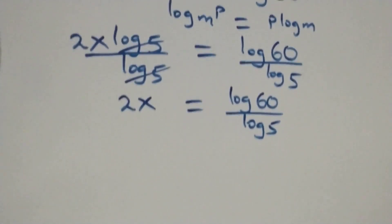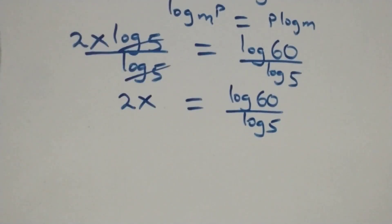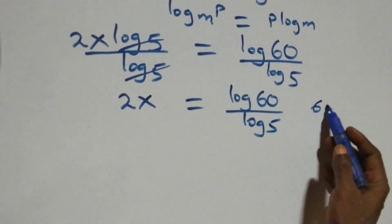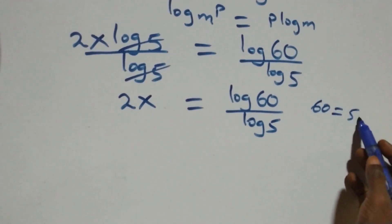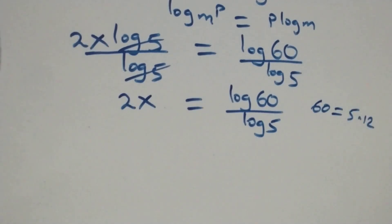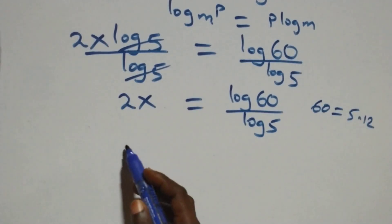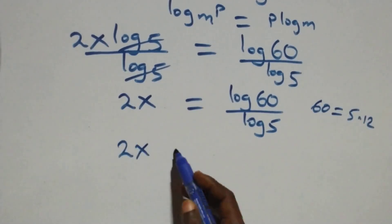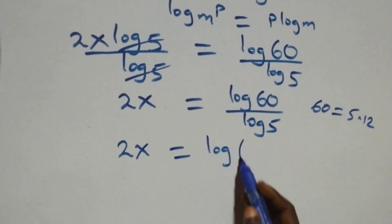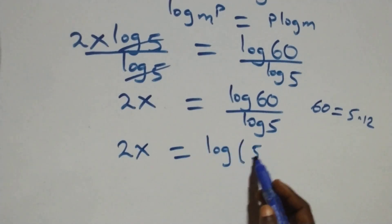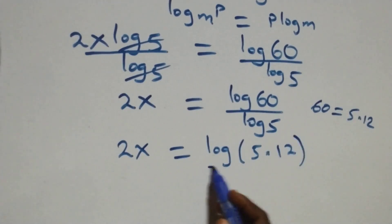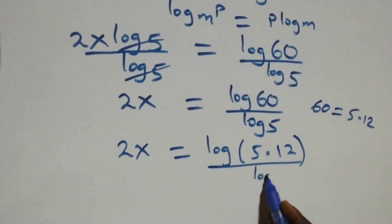Then we express sixty as five times twelve. This means what we have becomes two x equals log of five times twelve, over log five.